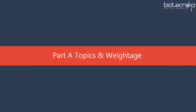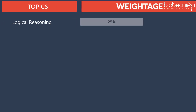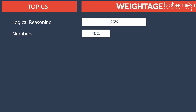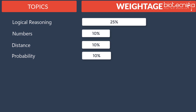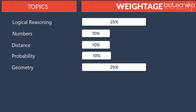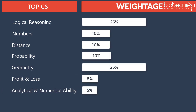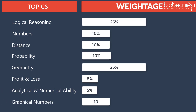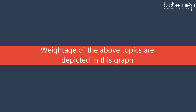Part A topics and weightage: Logical Reasoning 25%, Numbers 10%, Distance 10%, Probability 10%, Geometry 25%, Profit and Loss 5%, Analytical and Numerical Ability 5%, Graphical Numbers 10%. The weightage of the above topics are depicted in this graph.